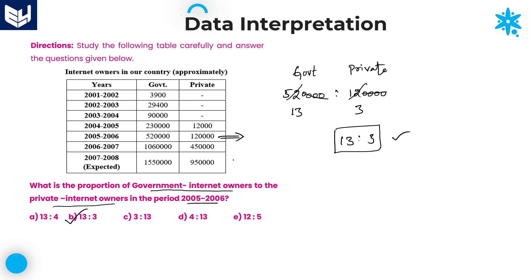Sometimes there is a chance of asking private to government. If it is private to government, your answer is 3:13, option C. Both options are given, so you must be aware of these two.